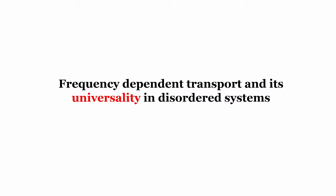Let us now come to the topic of interest today: frequency dependent transport and its universality in disordered systems. This is essentially the part of scaling laws I was referring to at the beginning. We will first begin with frequency dependent transport, also called AC transport, and then look at a more general approach — how disordered systems together are universal in nature and what brings them into the same category of universality.